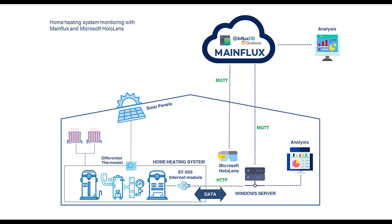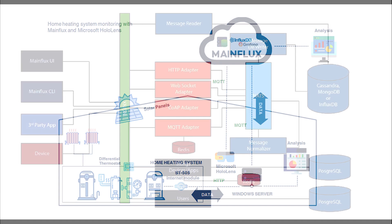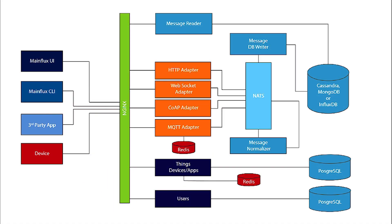The data is decoded and then published to the Mainflux IoT platform via MQTT, where the Mainflux normalizer does its job and puts the data into the Mainflux InfluxDB database.